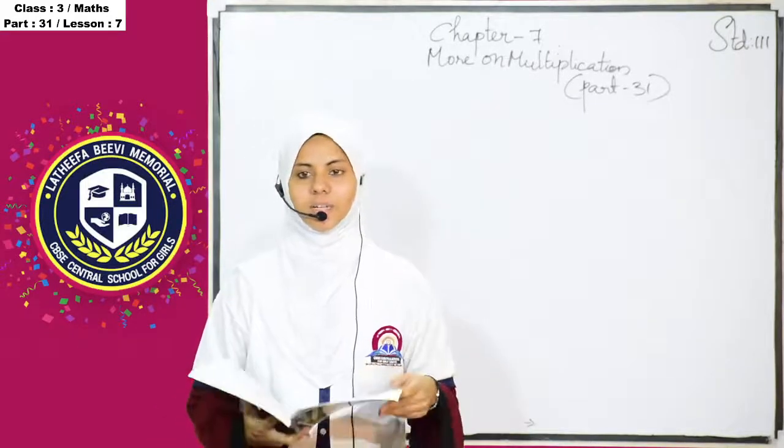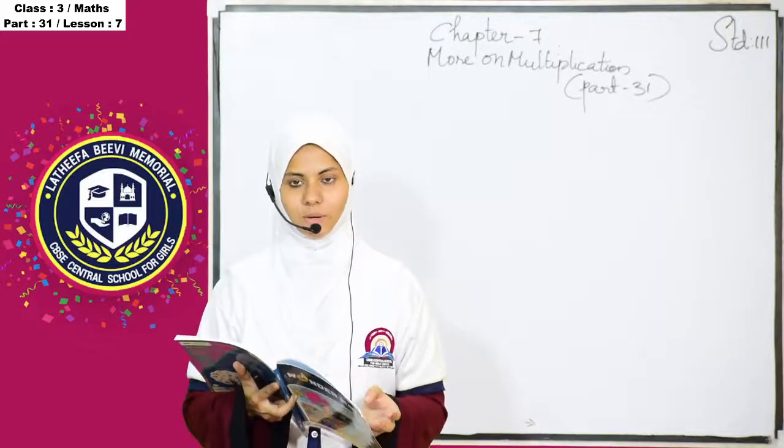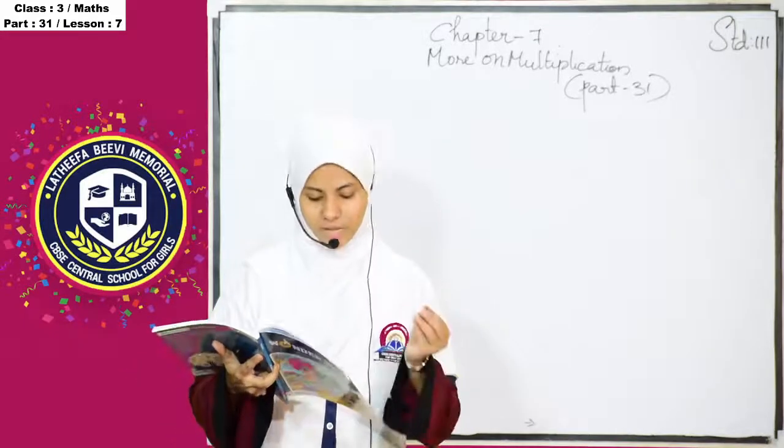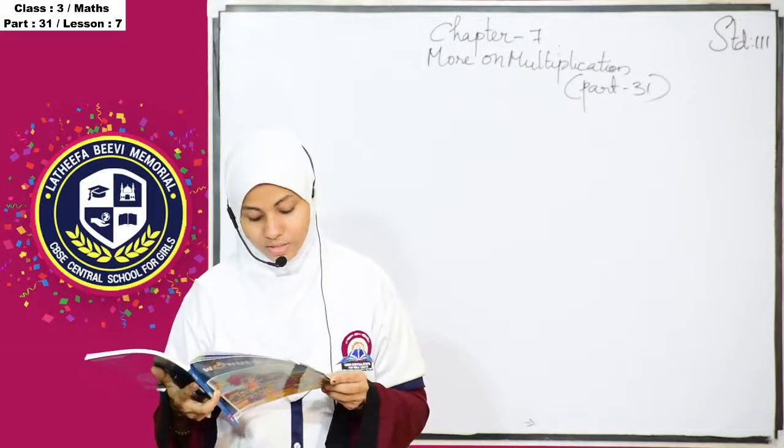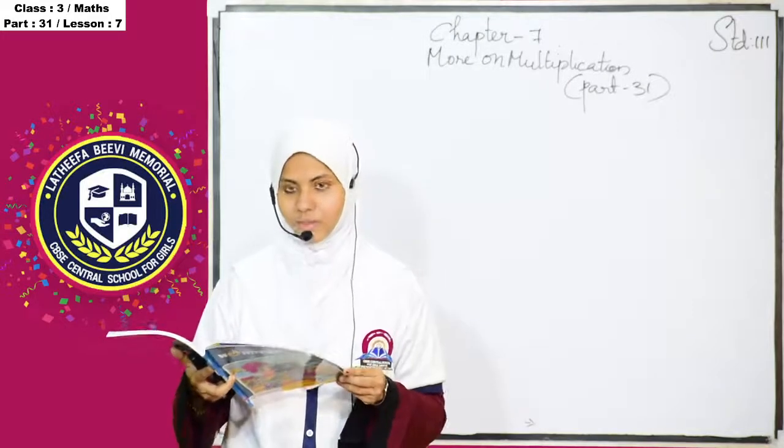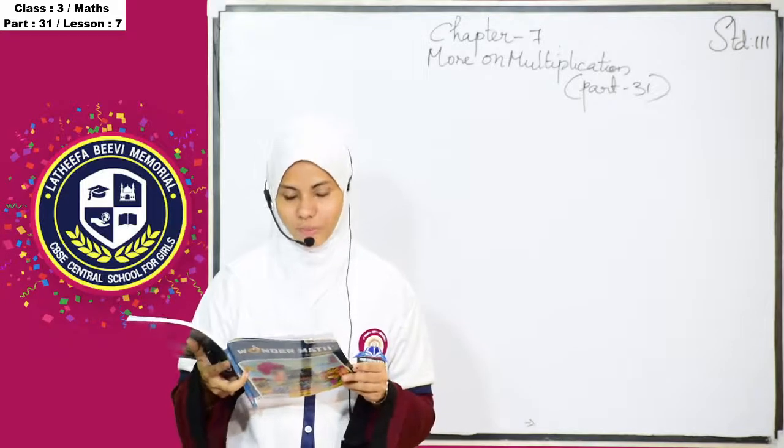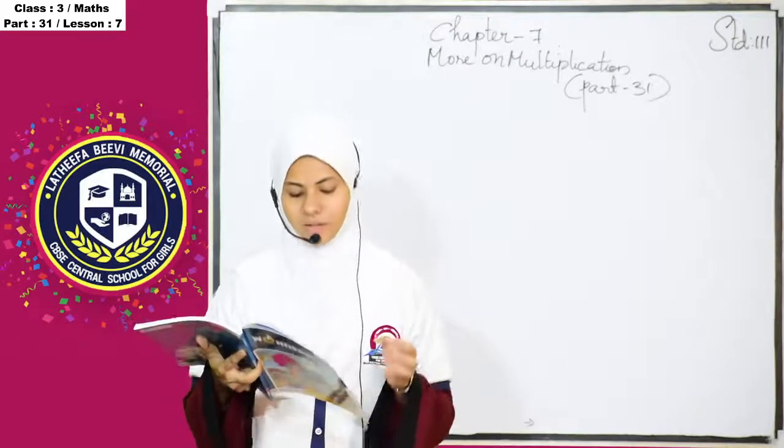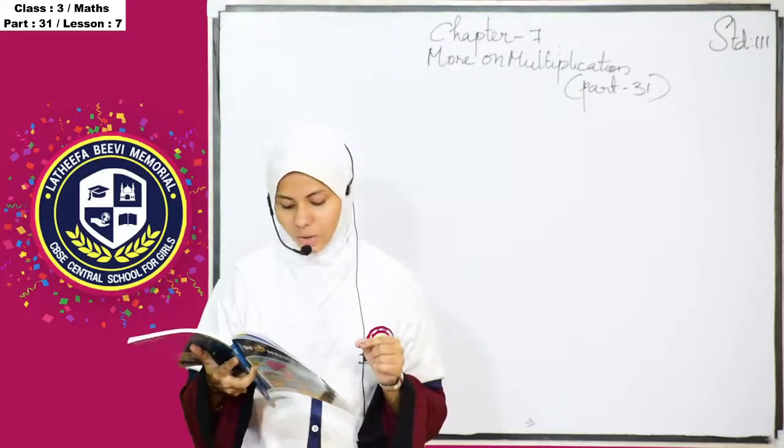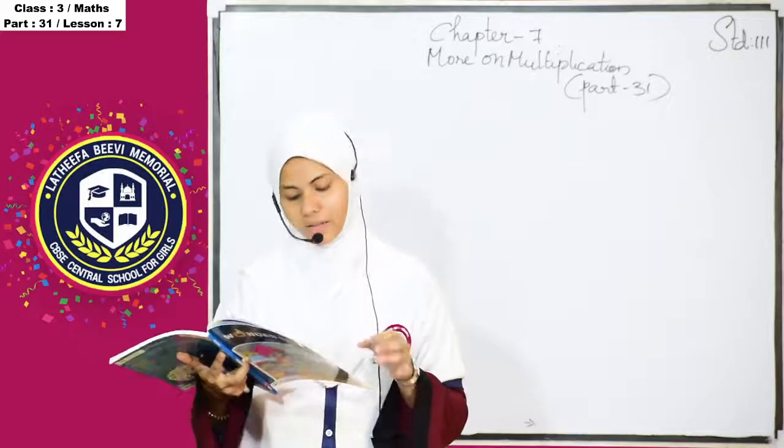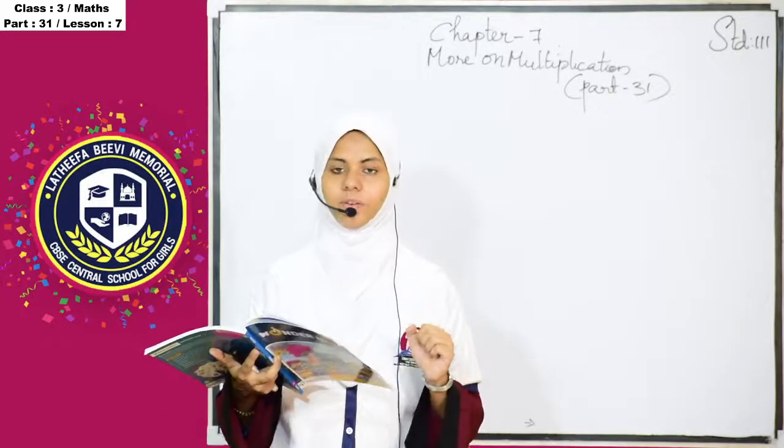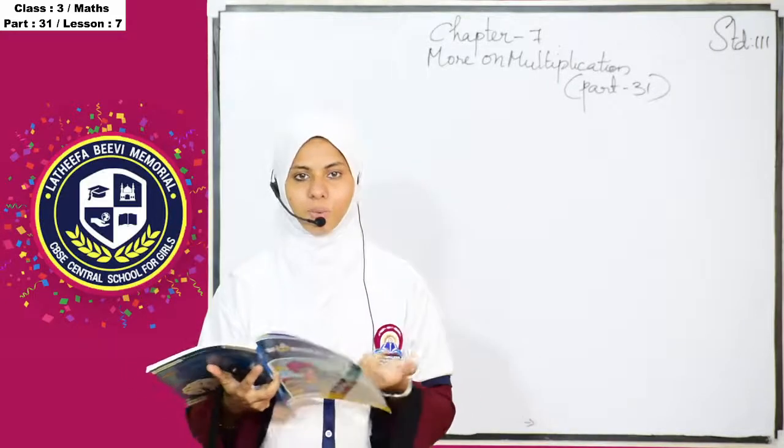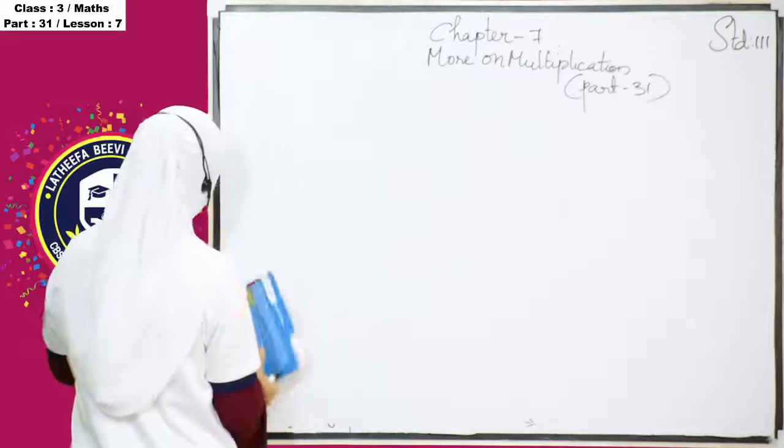So in the last class we started multiplication of two digit number by a two digit number, and we done three word problems based on that topic. Today we are moving to the next problem that is a juice vendor sells around 38 glasses of juice every day. If each glass of juice costs rupees 25.